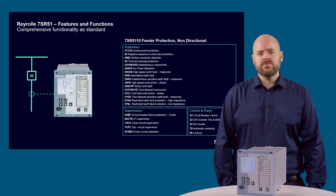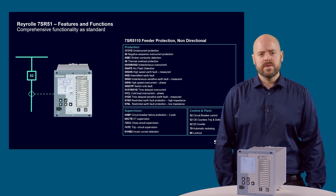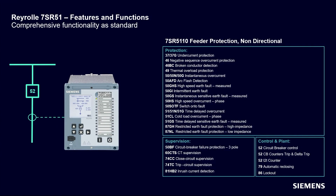Its 4CT inputs are suitable for connection to both 1A and 5A current transformer secondary windings and includes a core range of functions as standard. Instantaneous and time-delayed overcurrent protection functions 50 and 51 provide 3-phase overcurrent and both calculated earth fault — determined from the sum of the 3-phase currents using suffix N after the function number — and measured earth fault protection, directly measured from a neutral CT or residual connection of the 3 line CTs, using suffix G.